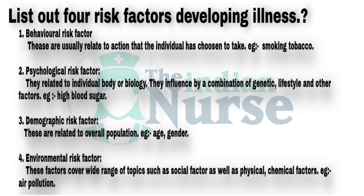Next one is a psychological risk factor — they are related to individual body or biology, influenced by a combination of genetic, lifestyle and other factors. Example: high blood sugar. Third one is a demographic risk factor — these are related to overall population. For example, age and gender. Fourth one is an environmental risk factor — these factors cover a wide range of topics such as social factors as well as physical and chemical factors. Example: air pollution.